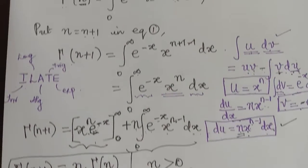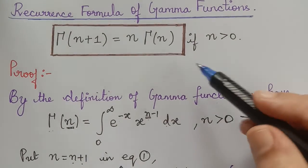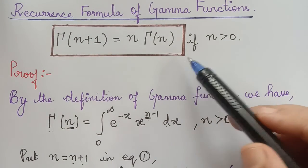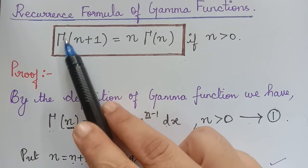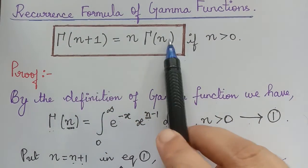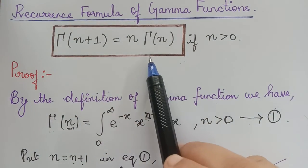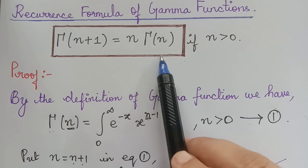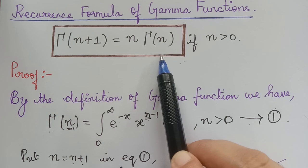Follow the next video to see property 2 and property 3, where property 3 will be a corollary of this property — specifically, we will prove that gamma of n plus 1 equals n factorial. Kindly follow the next video to learn further properties of beta and gamma functions. Thank you.